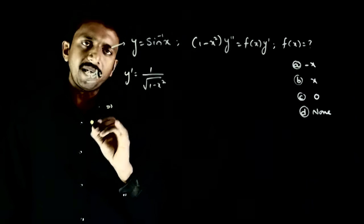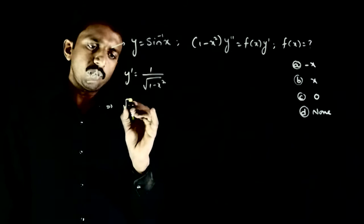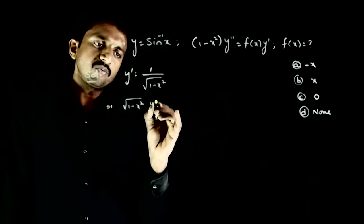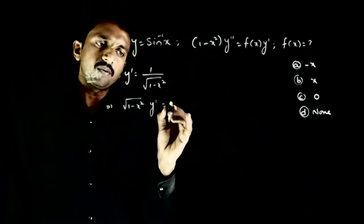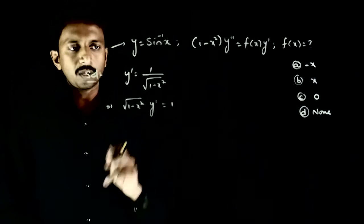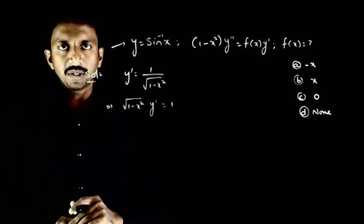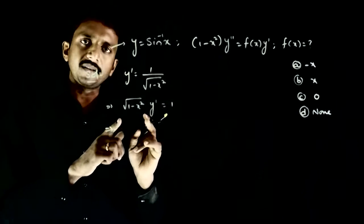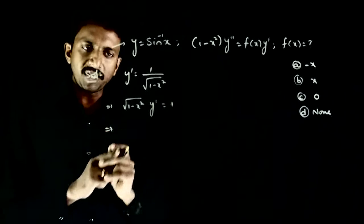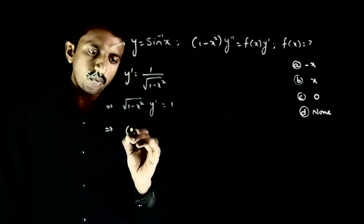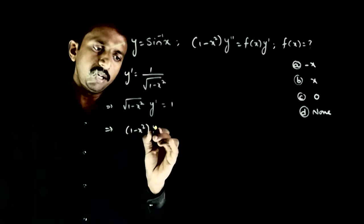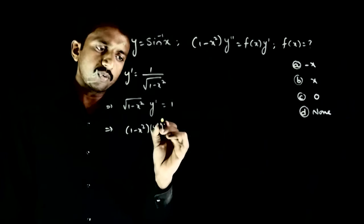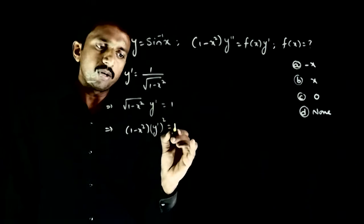This implies, by cross multiplication, square root of 1 minus x squared times y dash is equal to 1. Now squaring both sides: 1 minus x squared into y dash whole squared is equal to 1.